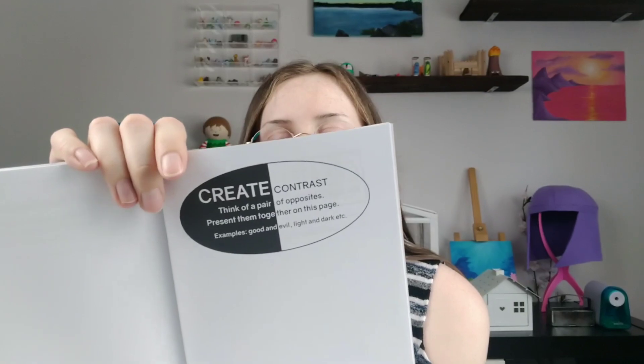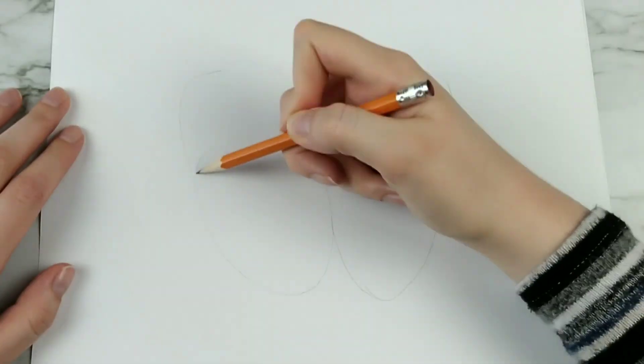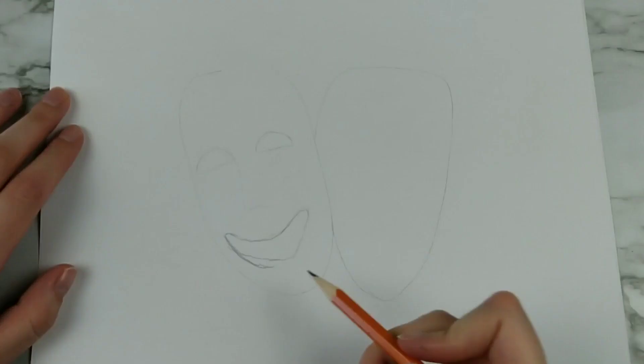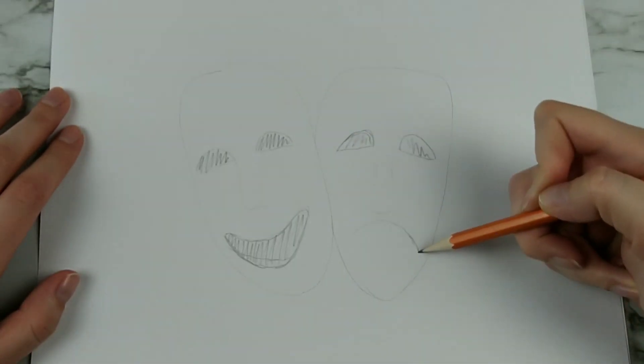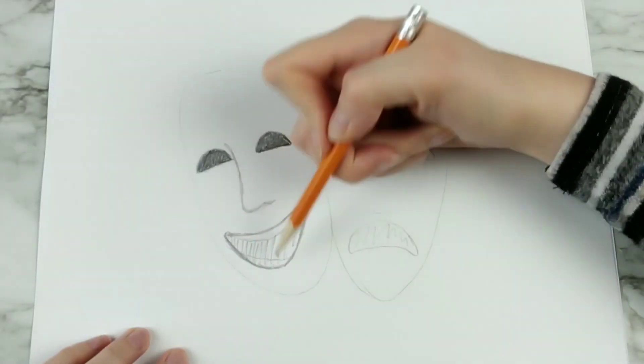We picked randomly so far and I'm kind of missing being in control, so I'm just gonna pick one that I will actually like. Or maybe I'll just do another random one. I just landed on this page: create contrast, think of a pair of opposites, present them together on this page. This is actually a great page because I have an idea for it right off the bat.